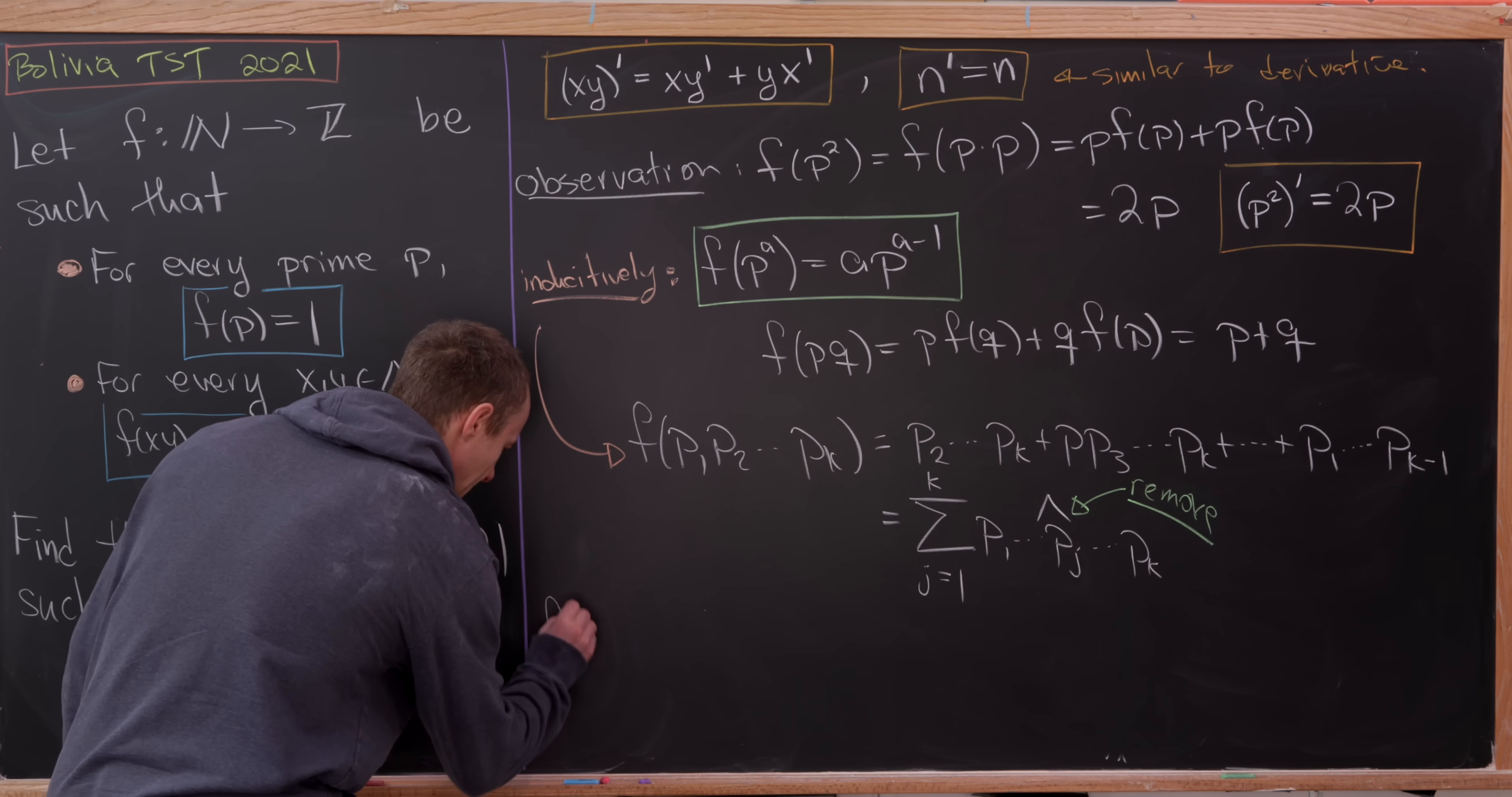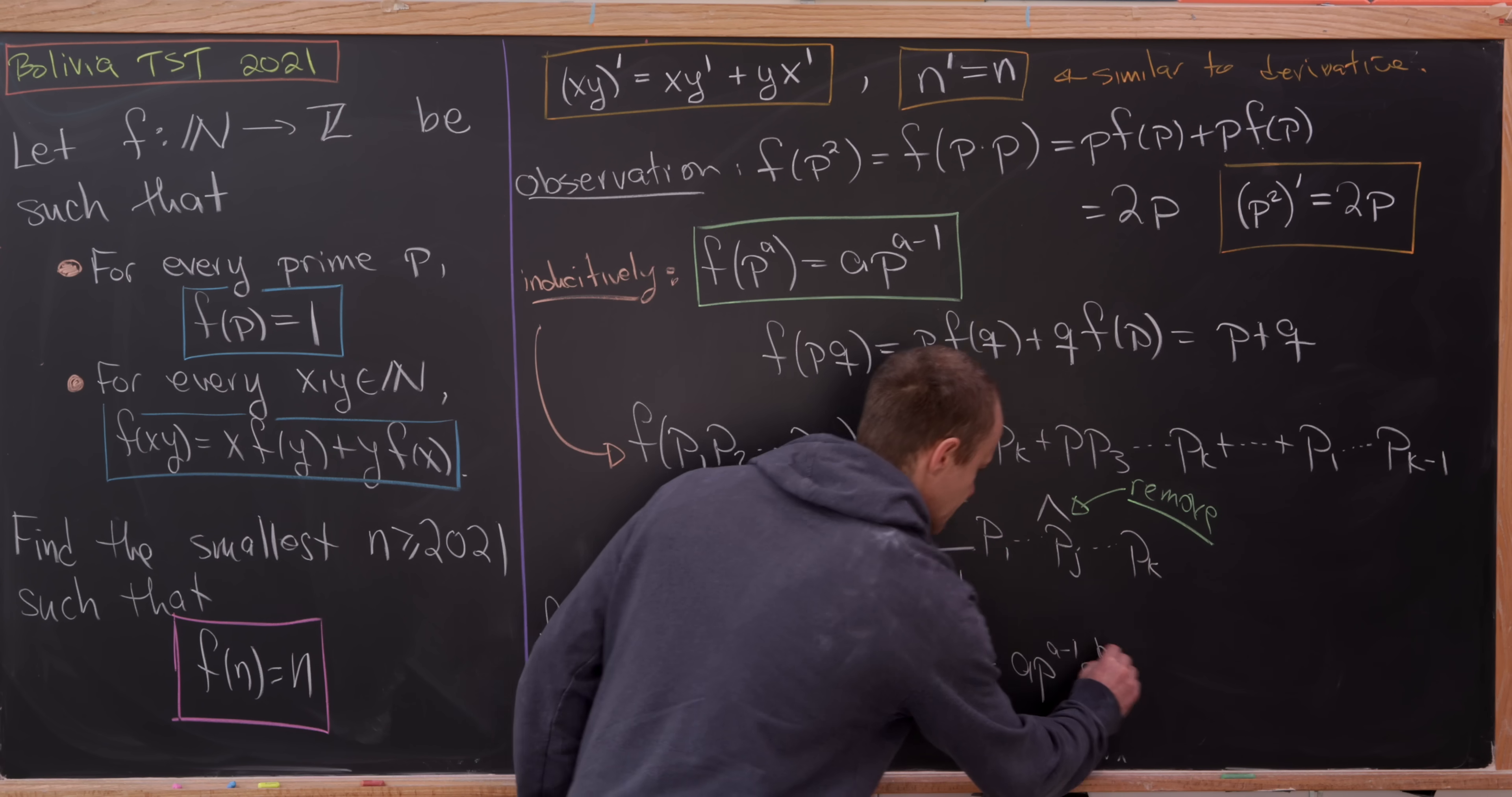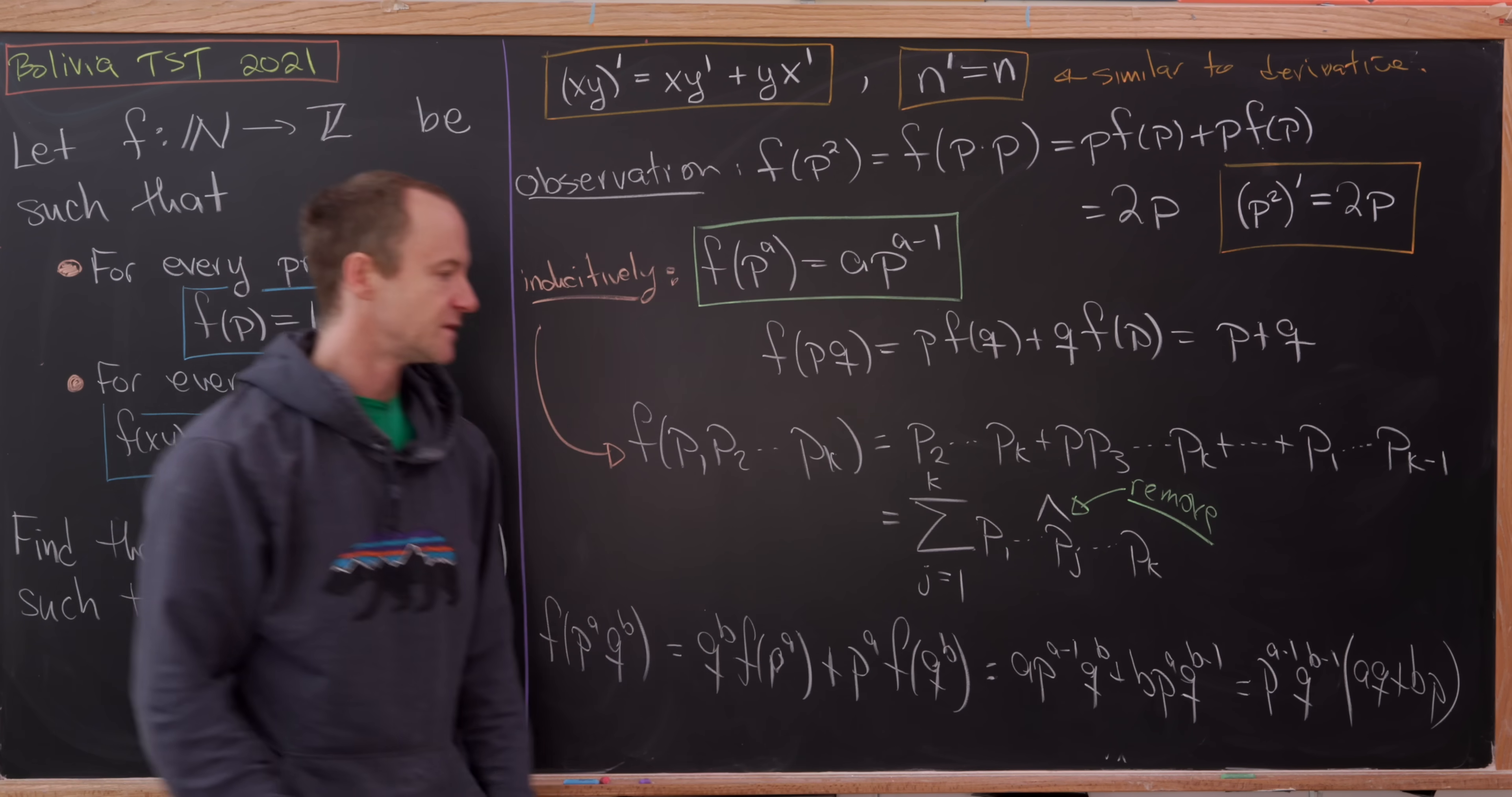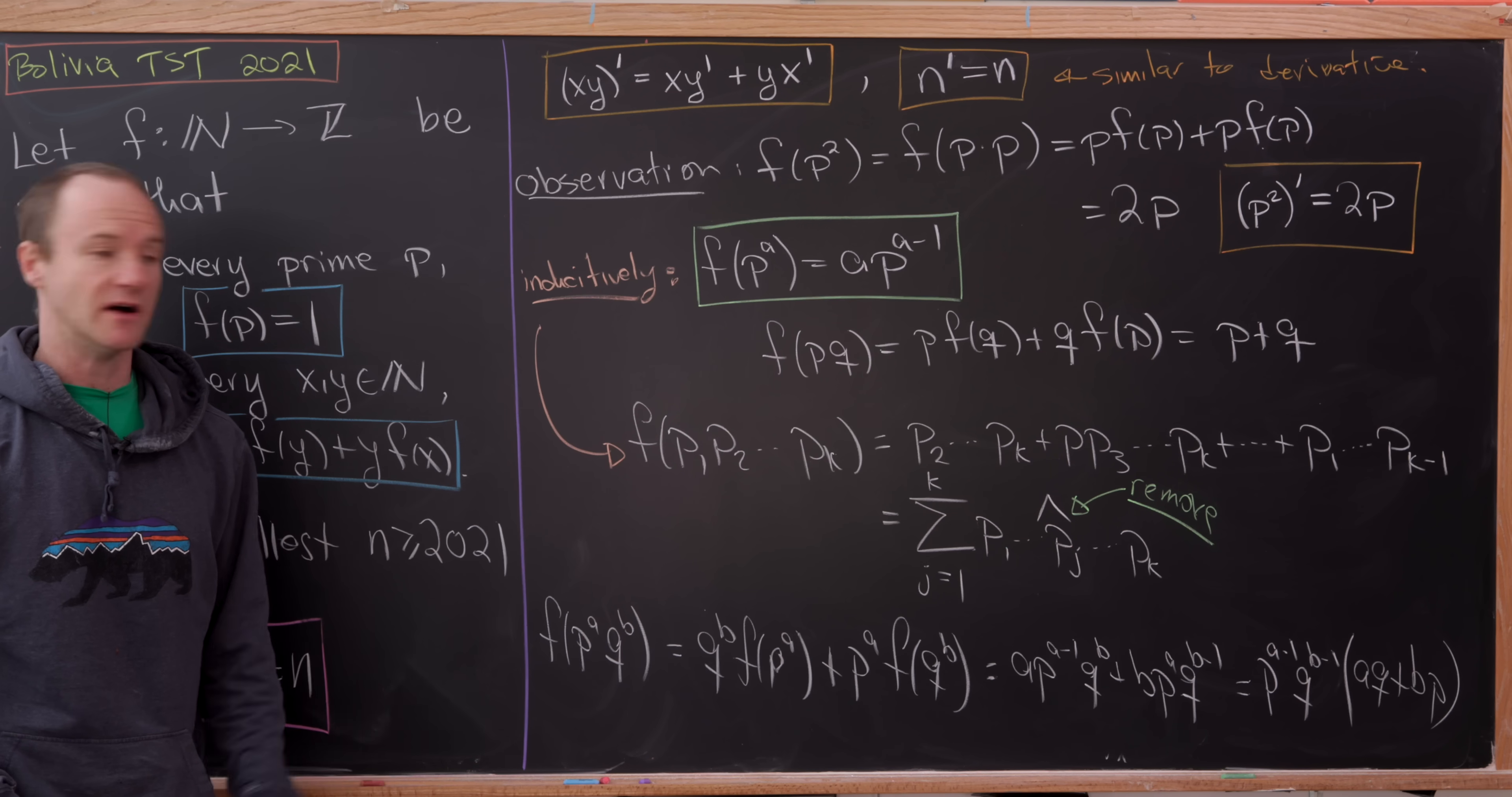Now maybe one more step. Let's look at f(p^a·q^b). So that's going to be equal to q^b times f(p^a) plus p^a times f(q^b). But observe, that's going to be a times p^(a-1) times q^b plus b times p^a times q^(b-1). But that turns into p^(a-1) times q^(b-1) times aq plus bp. So the important thing here is that the starting power of q is now a coefficient of p, whereas the starting power of p is now a coefficient of q. So now let's start our next set of steps with a generalization of this equation.